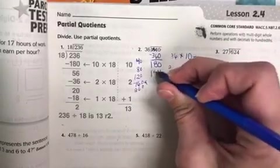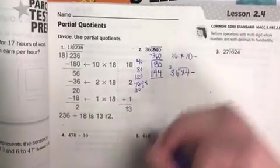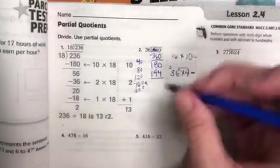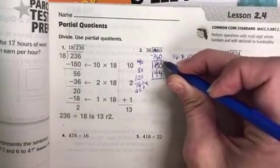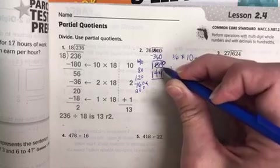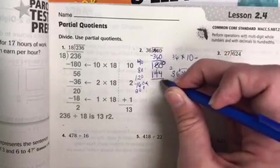So when I subtract that, 0 minus 4, oh I can't do that. So again, I'm going to borrow from the tens place and regroup that 10 into my ones. So now I had 0, now I have 10 ones minus 4 ones. 10 minus 4 is 6.